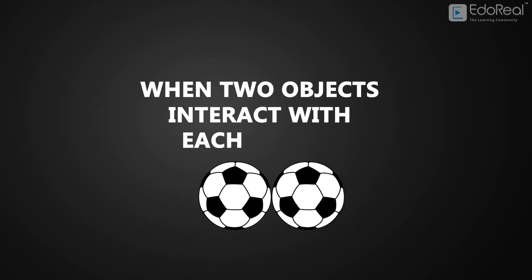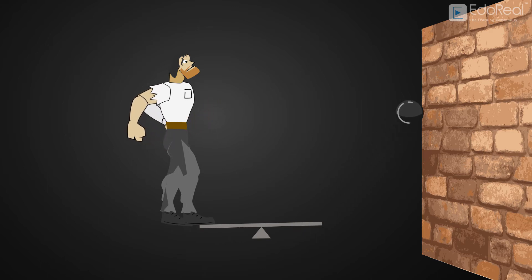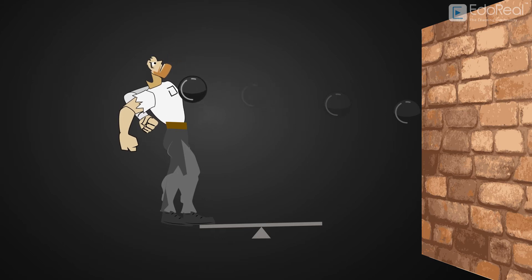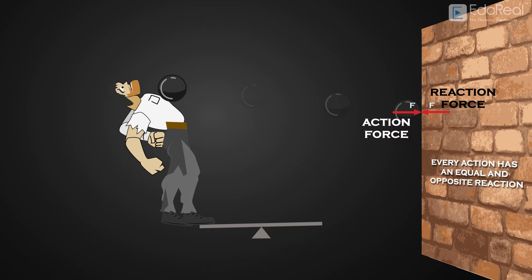Third Law: what happens when two objects interact with each other? When a ball hits the wall, the ball exerts a force on the wall, and the wall exerts a force on the ball. There are two forces that result from the interaction. The magnitude of the two forces are the same, but the directions are opposite. These are called action and reaction forces. The Third Law states that every action has an equal and opposite reaction — forces always occur in pairs of equal and opposite forces.